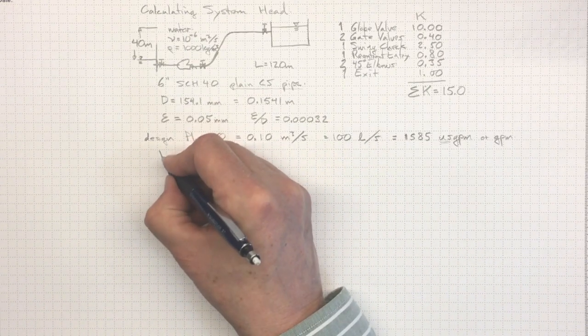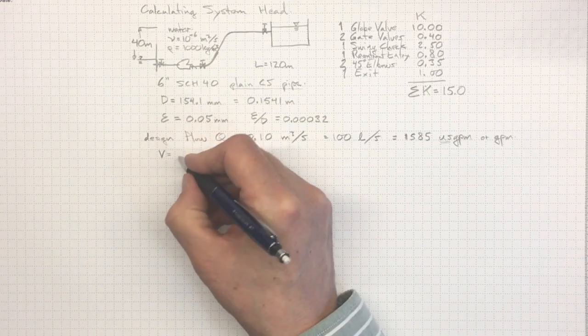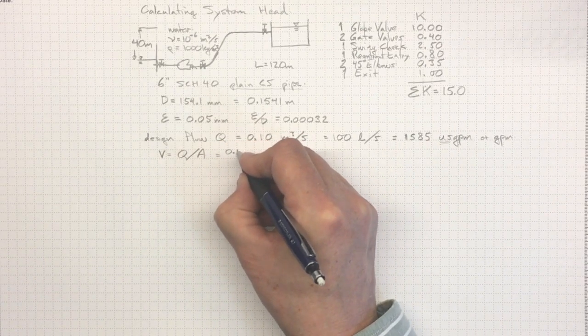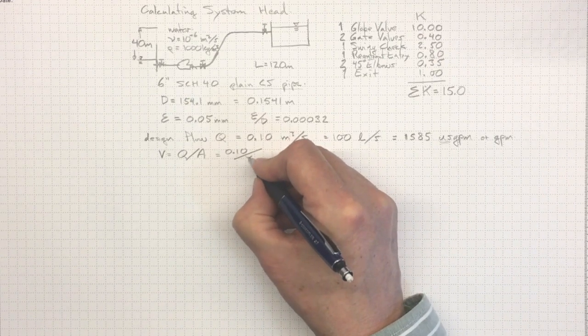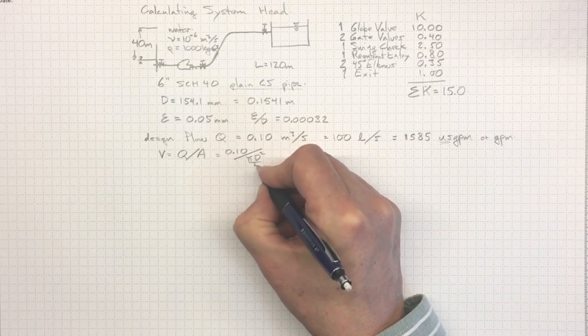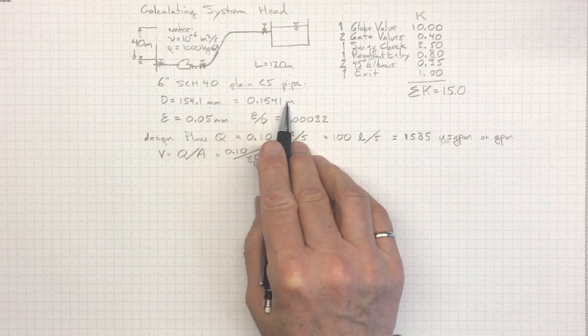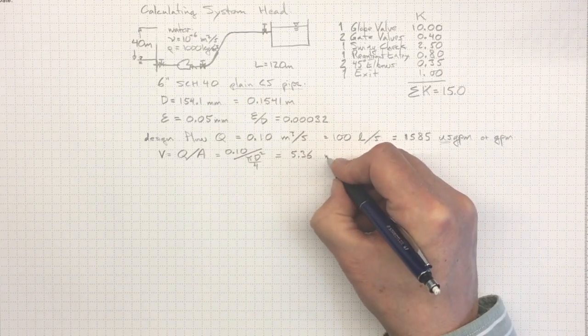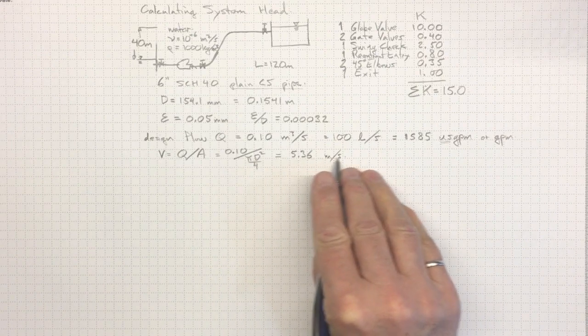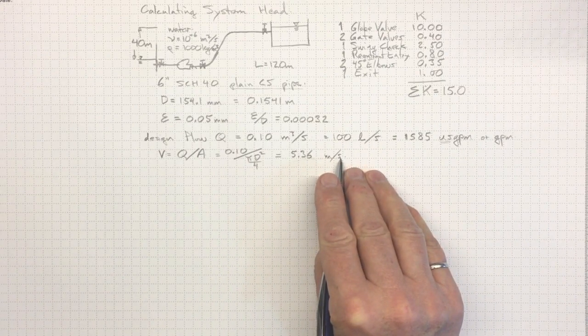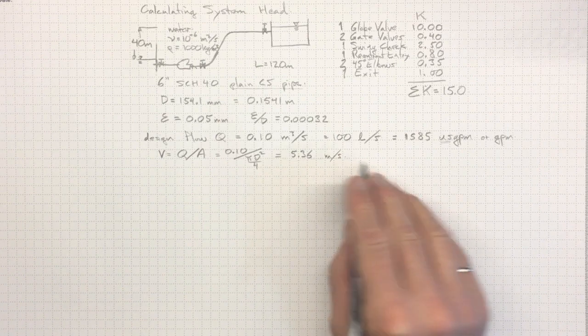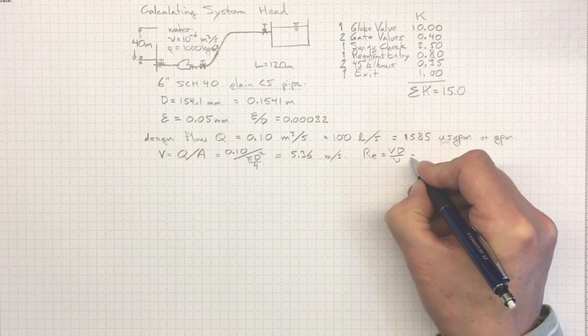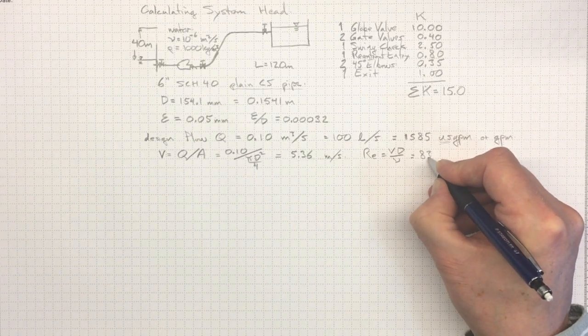So, if we want to figure out what's going on here at the design flow rate, then we'll need to find out what the velocity is so that we can get the Reynolds number. And it's going to be Q divided by the cross-sectional area. So, that'll be 0.10 divided by pi d squared over 4. The diameter here, make sure it's in meters. And I'll get 5.36 meters per second. So, that's not an atypical velocity for a liquid in some piping systems. If I plug in for the Reynolds number, which is the velocity times the diameter divided by the kinematic viscosity, I'll get about 83,000.